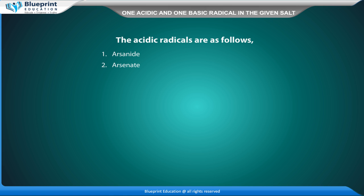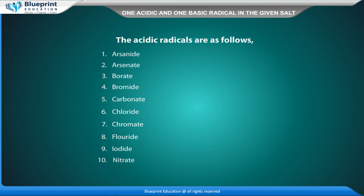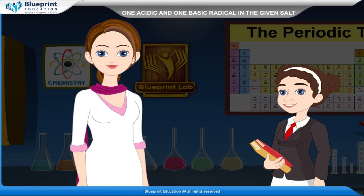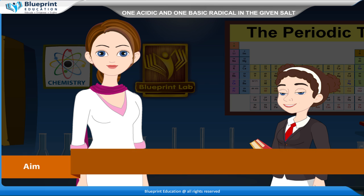The acidic radicals are as follows: arsenide, arsenate, borate, bromide, carbonate, chloride, chromate, fluoride, iodide, nitrate, oxalate, phosphate, sulfide, and sulfate. Let's do an experiment to find one acidic and one basic radical in the given salt.